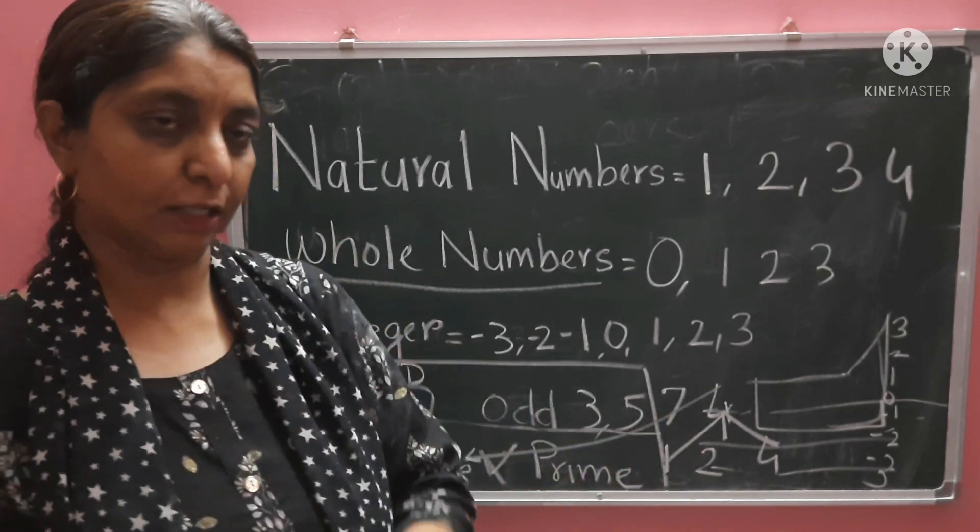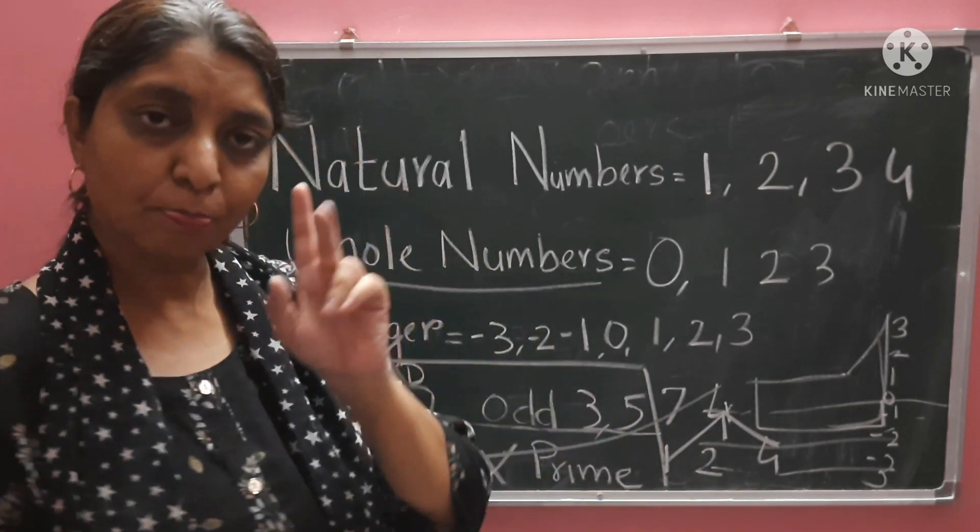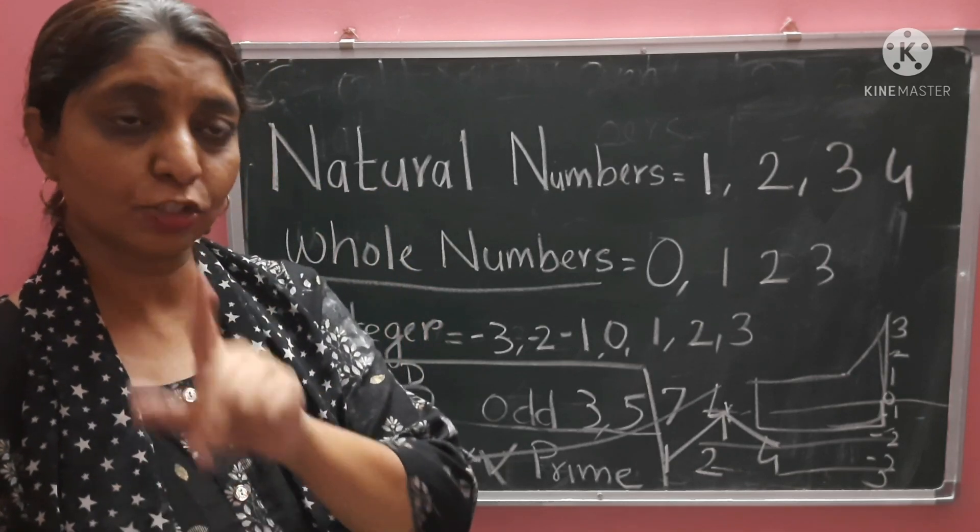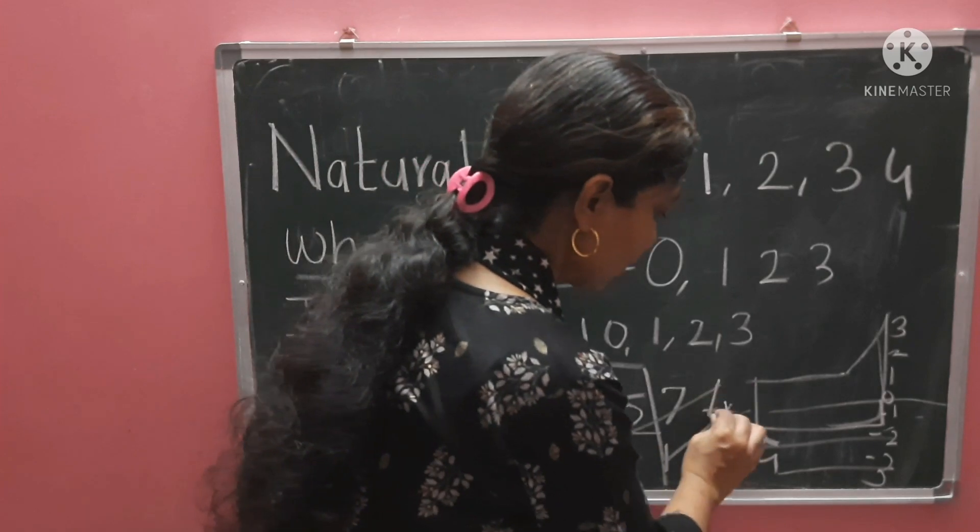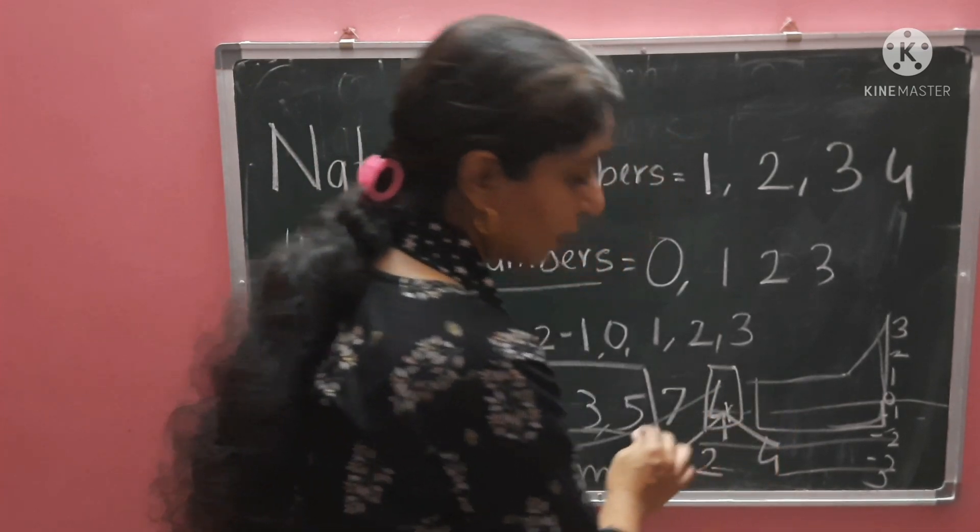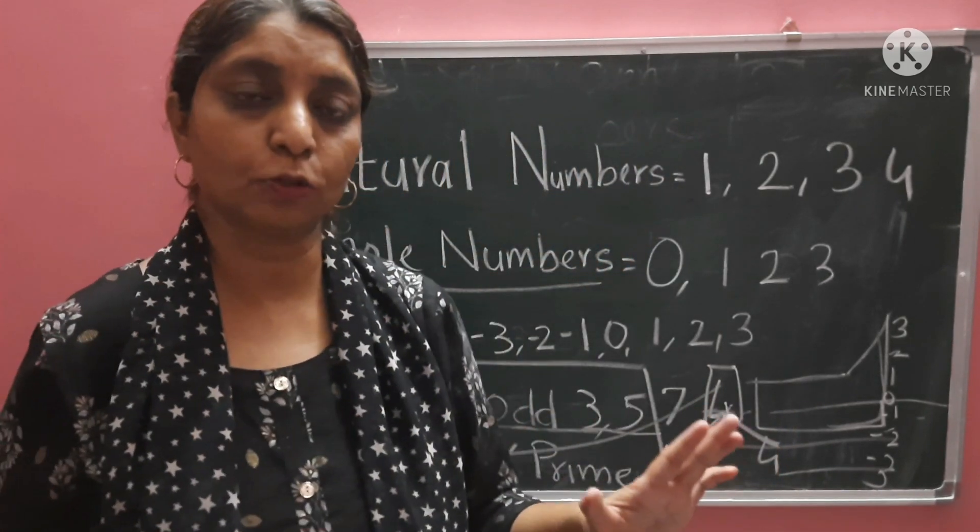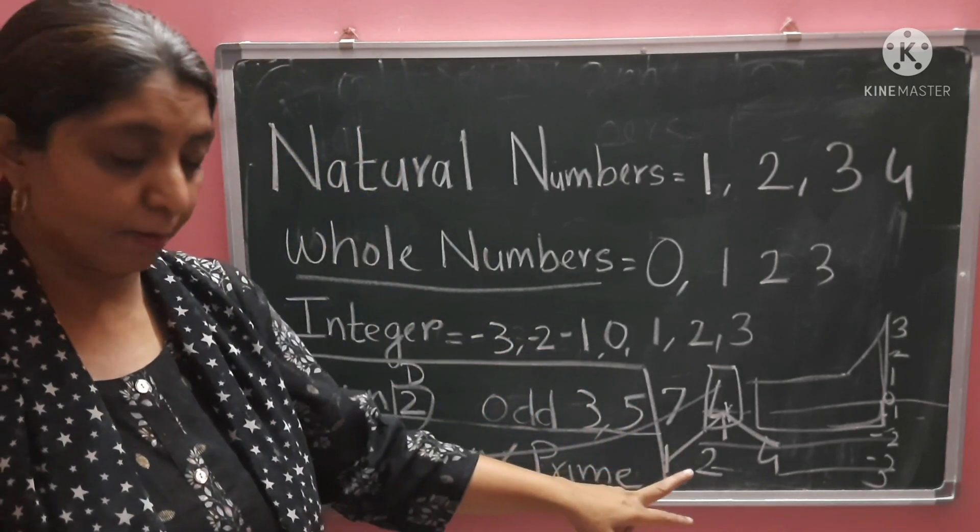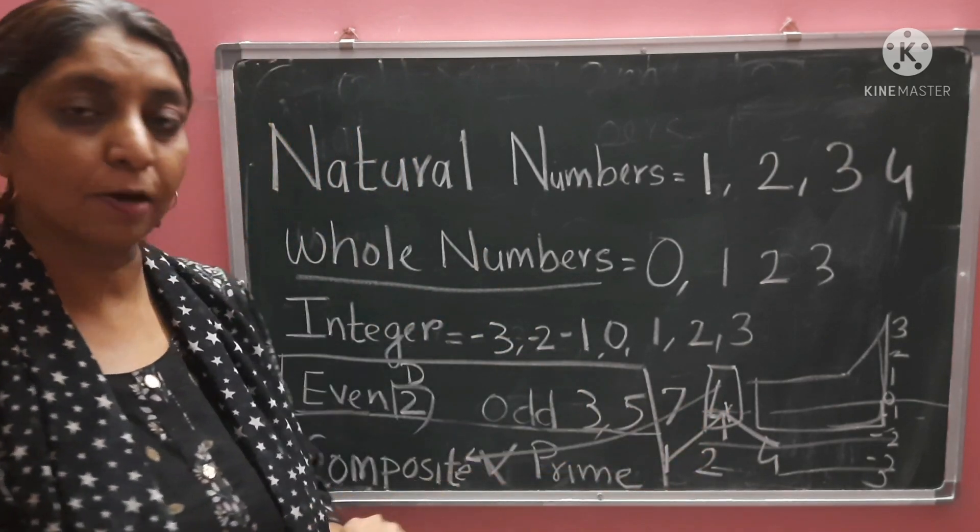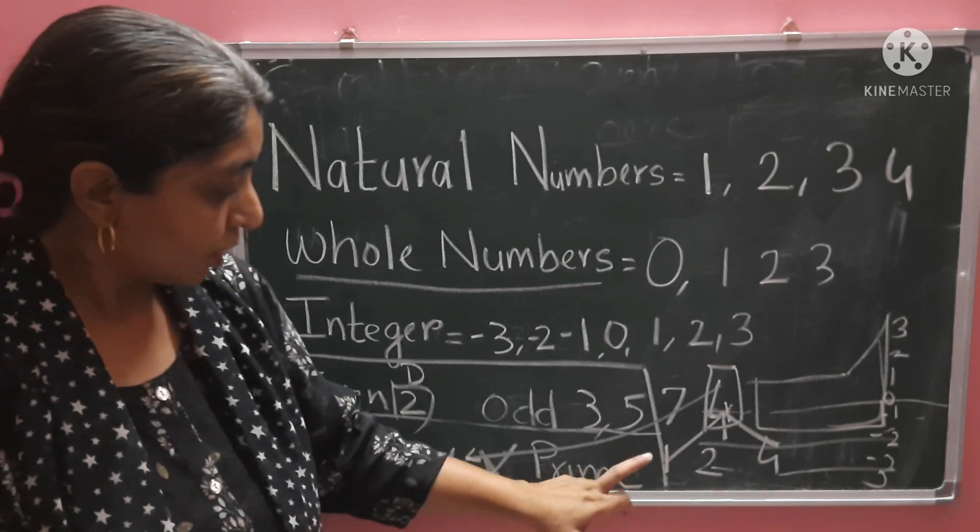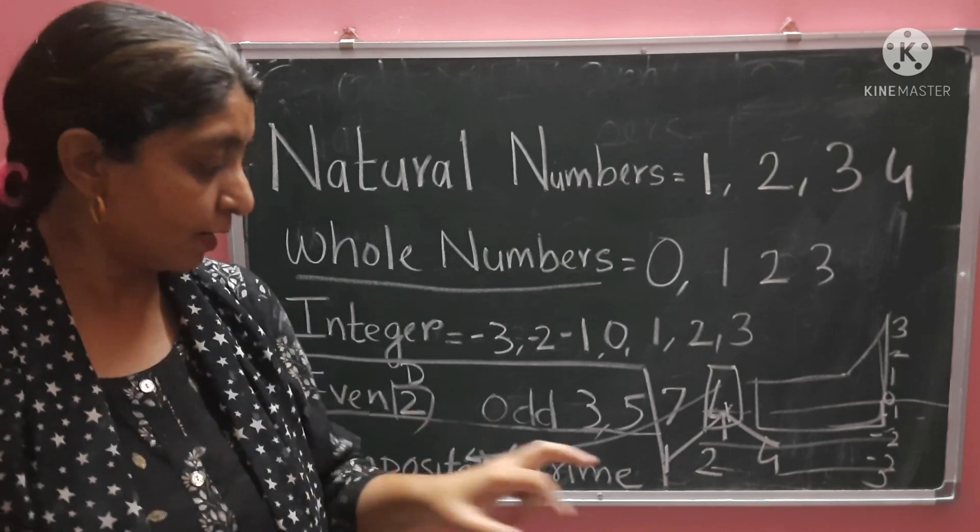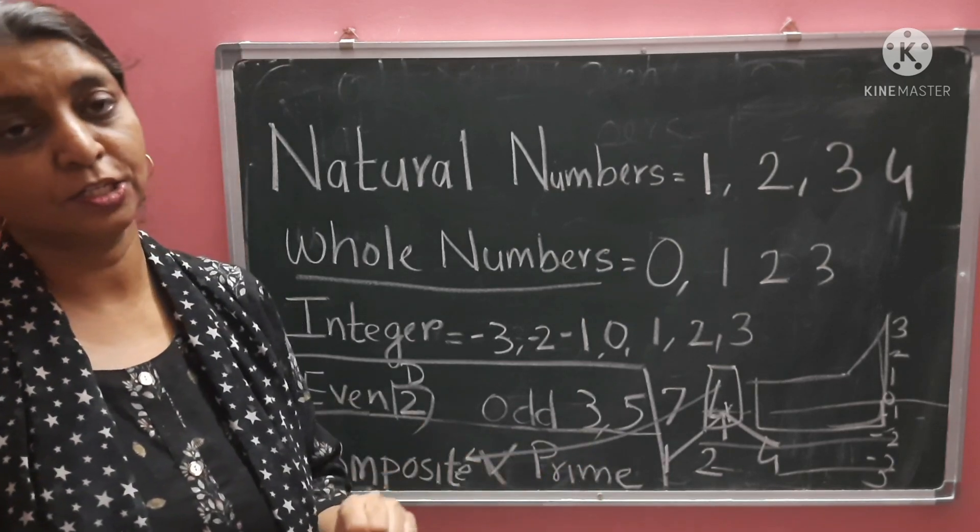Prime numbers have only two factors. So, the smallest composite number - keep in mind - the smallest composite number is 4. Because 1 is neither prime nor composite. All numbers are greater than 1. The smallest prime number is 2, which is the only even prime number.